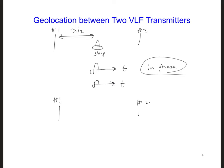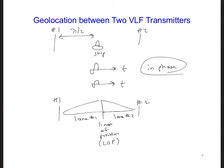We can draw vertical lines at the locations where the signals are in phase and call these lines of position, or LOPs. Anywhere along a line of position, the ship is an equal distance from both transmitters, and the two signals will be in phase. This divides the space between the transmitters into lanes. At 10 kilohertz, each lane is half a wavelength — 15 kilometers wide. We can determine how far we are from either transmitter by counting which lane we're in.